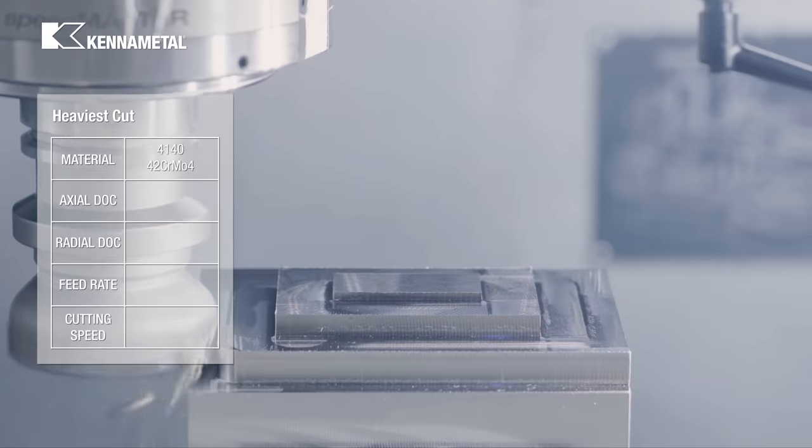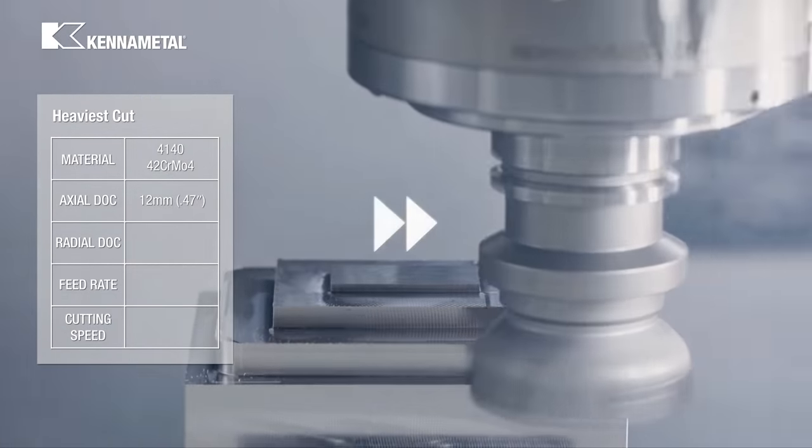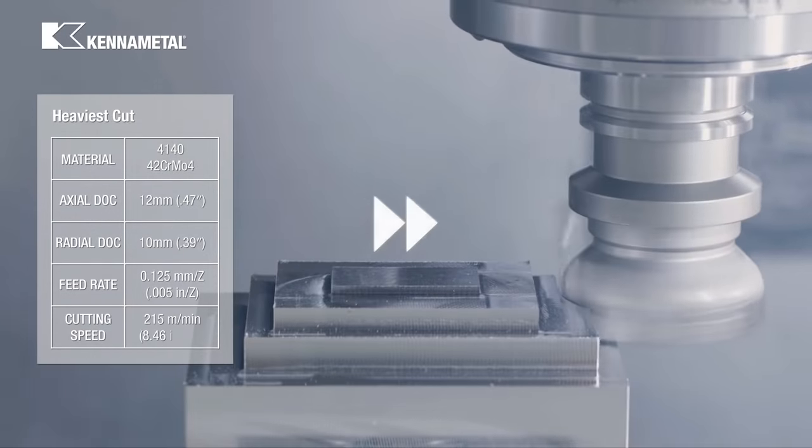We're increasing the axial depth of cut to the maximum of 12 millimeters, while we're decreasing the radial depth of cut to 10 millimeters. Feed and speed remain the same.